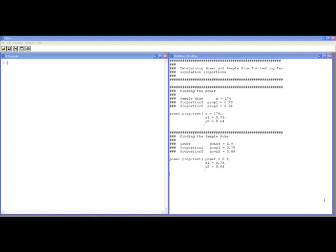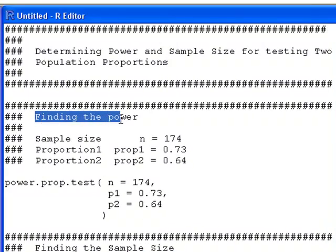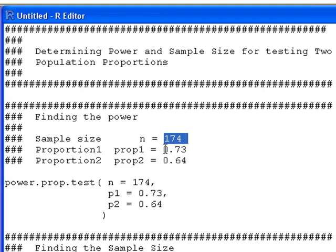So the first thing we need to do is find the setup that we have for our typical two sample test on a proportion. So first thing we're going to want to do is find the power and what I have for my setup here is I have a sample size of 174, estimated proportion of 0.73, and I have another proportion for population 2 of 0.64. And what I'm interested in is what is the power of my test to be able to detect a difference this big. And the code is extremely straightforward.